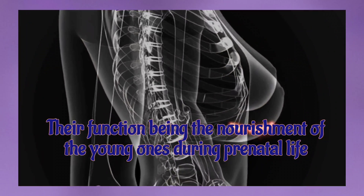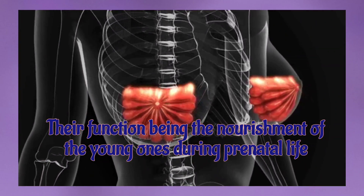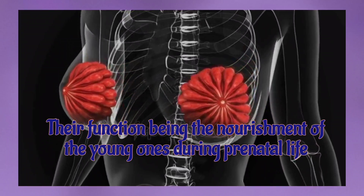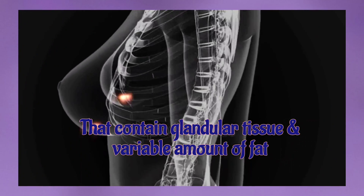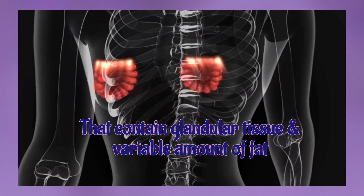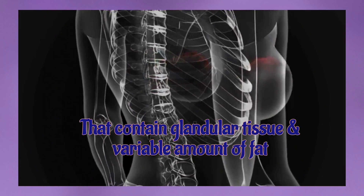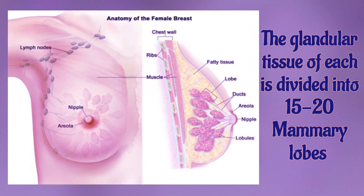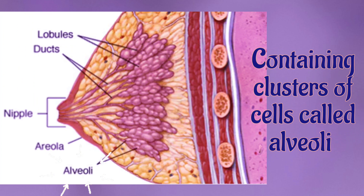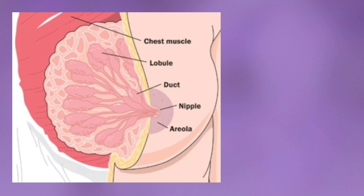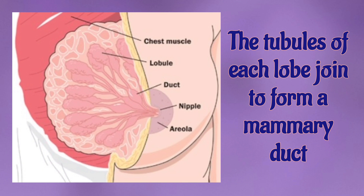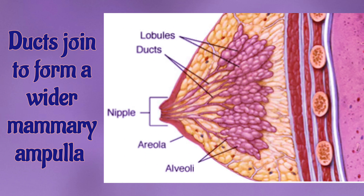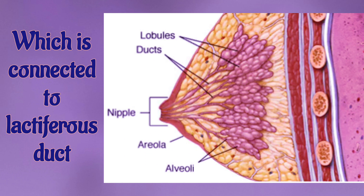Also associated with the female reproductive system are mammary glands, whose function is the nourishment of young ones during postnatal life. The mammary glands are paired structures that contain glandular tissue and a variable amount of fat. The glandular tissue of each is divided into 15 to 20 mammary lobes containing clusters of cells called alveoli. The alveoli open into mammary tubules, which join to form mammary ducts.